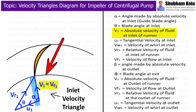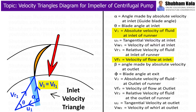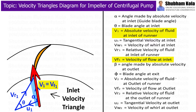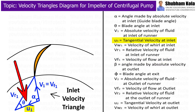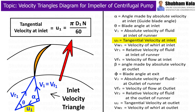Therefore, the absolute velocity of fluid, indicated as V1, equals the velocity of flow Vf1. Since V1 itself acts as the vertical component, the horizontal part Vw1 will be 0. The tangential velocity at inlet, also known as velocity of blade at inlet, is denoted as U1, which can be written as π·d1·N divided by 60.